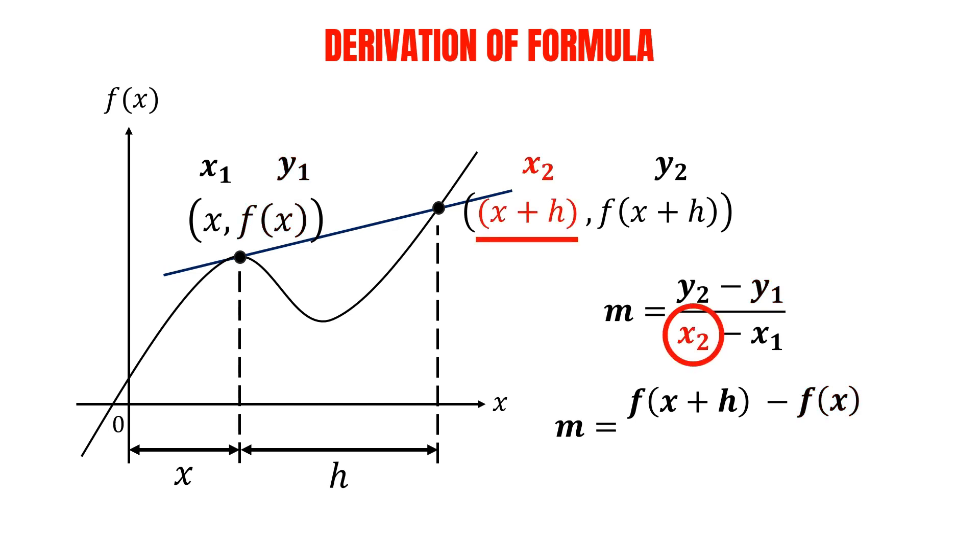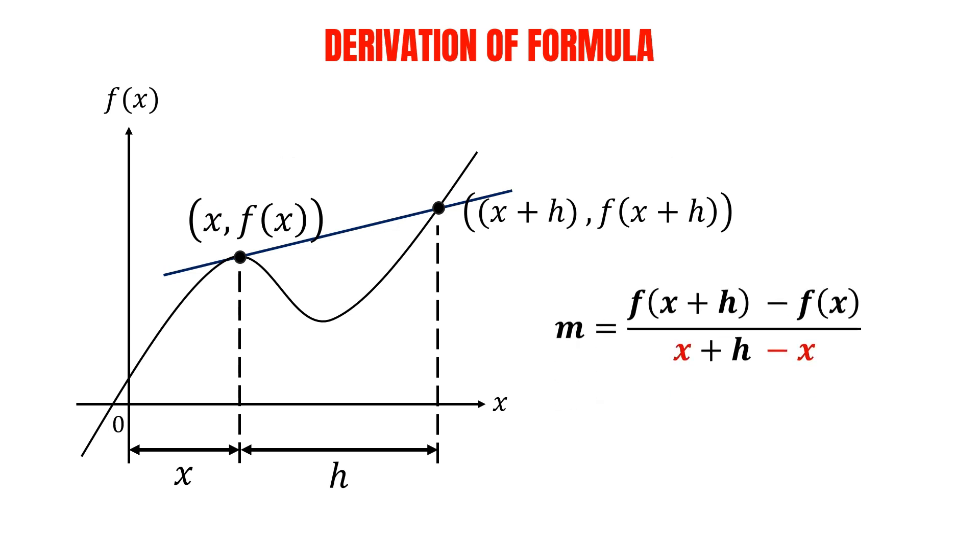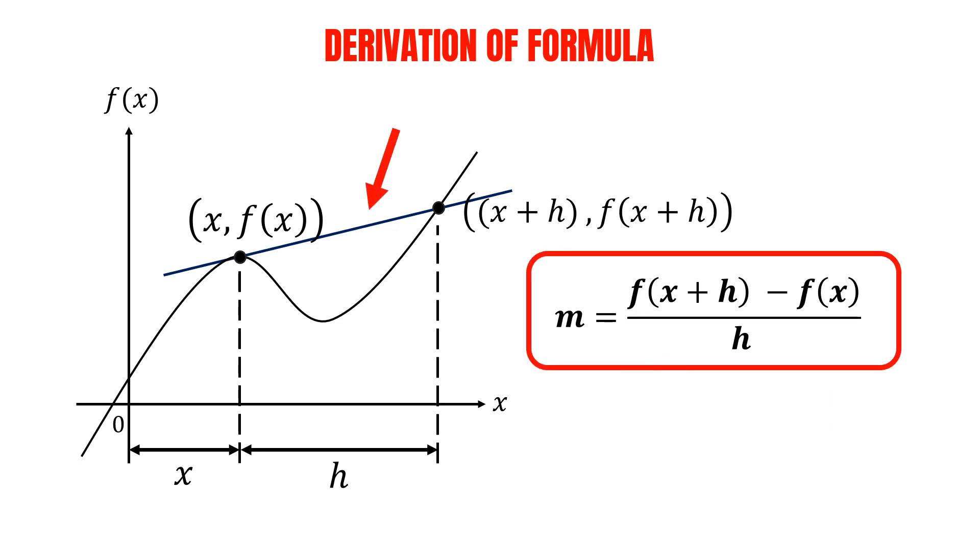We do the same thing for x2 and x1. We substitute both of them into the formula accordingly. And we have finished substituting the x and y-coordinates into the formula. Notice that we have x and minus x in the denominator, so we can cancel them out. And we've got the gradient function of the secant line.